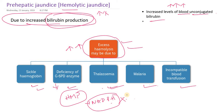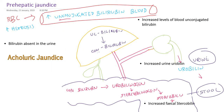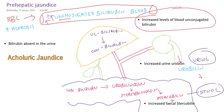Similarly, in malaria and mismatched blood transfusion, the unconjugated bilirubin accumulates in the blood. The liver cannot conjugate all of the unconjugated bilirubin coming to it because there is an enormous amount of RBC rupture producing more unconjugated bilirubin than the liver can process. As a result, there is increased unconjugated bilirubin in the blood.